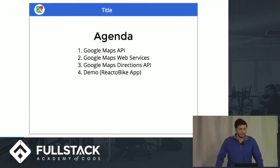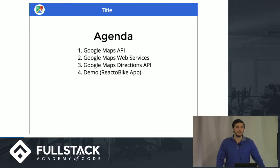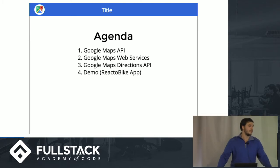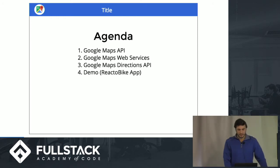First, just to go over what we'll be talking about today: we're going to do a quick review of what the Google Maps API is and how it's used. We're going to go over the different Google Maps web services that are available so you can leverage a lot of the geographic data. Then we're going to do a deeper dive into the Google Maps Directions API and a demo of an app I built in React using that.